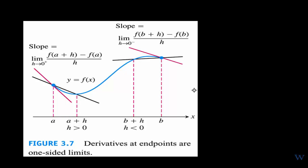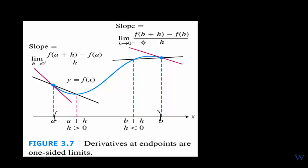Just to show that derivatives at endpoints are one-sided limits: at the left endpoint x equals a and the right endpoint at b, the secant lines ease into the tangent line. When h is positive, you take the limit of the slope of the secant line as h approaches zero from the right. On the other side when h is negative, you take the limit as h approaches zero from the left.